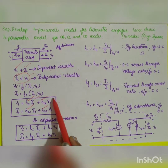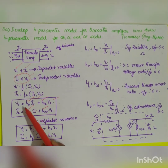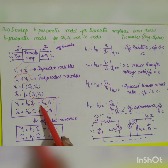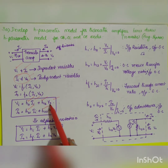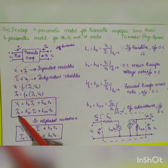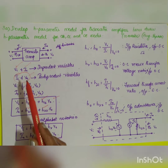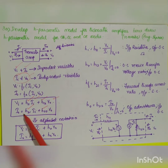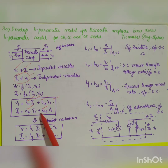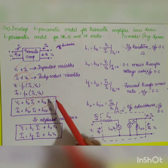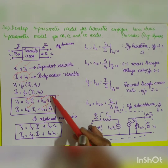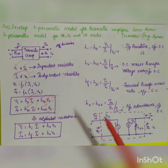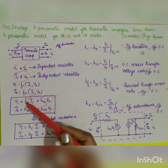The equations are: Vi = h11·Ii + h12·Vout, and Iout = h21·Ii + h22·Vout. These are the generalized h-parameter equations relating input voltage and output current to input current and output voltage.